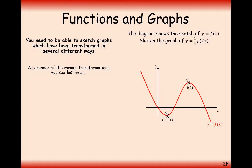Let's have a go at two graph stretches. In this case we've got y equals a quarter f(2x). We can see we have two transformations: one of the x-axis variety and one of the y-axis variety, so it doesn't matter which one we do first. Let's pick the 2 that's inside the brackets. Remember when we're inside the brackets it's inverse — so it's not stretched out by a factor of 2; it's stretched inwards by a scale factor of a half.